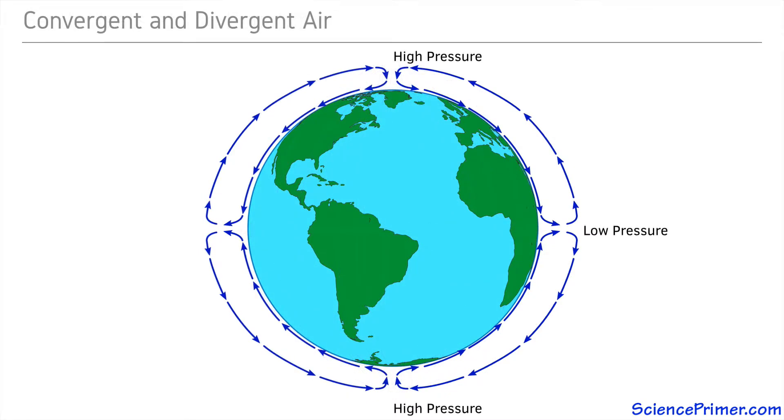With regions of converging air near the ground at the equator and at the top of the troposphere over either pole, and regions of divergent air at the top of the troposphere along the equator and near the ground at either pole.